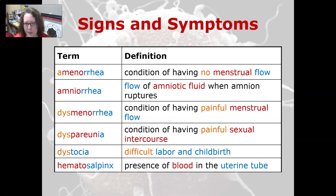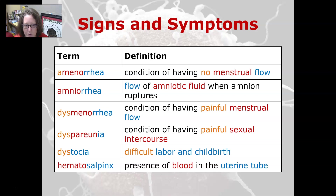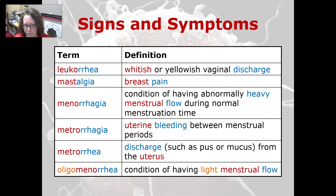Dysmenorrhea is a condition of having painful menstrual flow, and dyspareunia is a condition of having painful sexual intercourse. Dystocia is difficult labor in childbirth, and hematosalpinx is the presence of blood in the uterine tube.